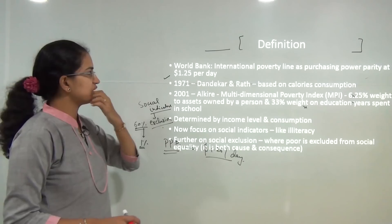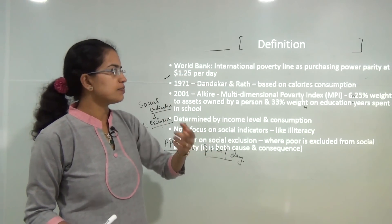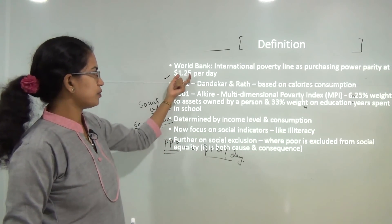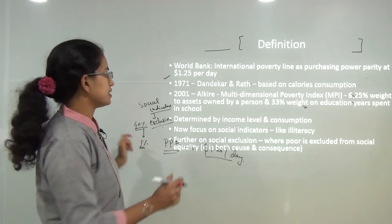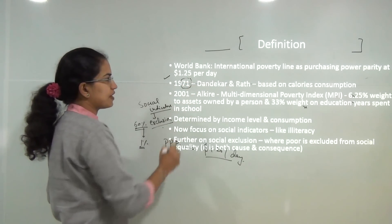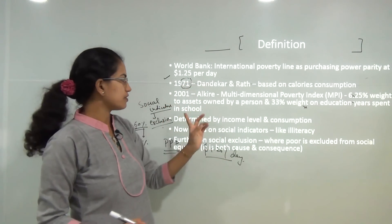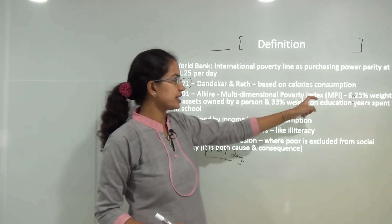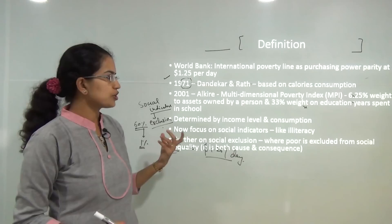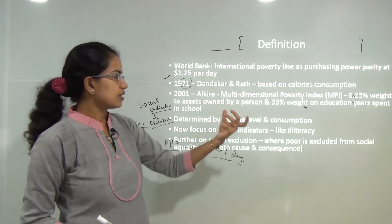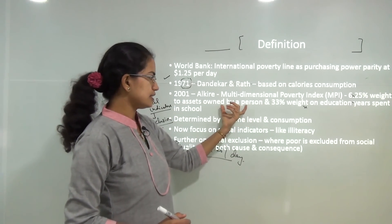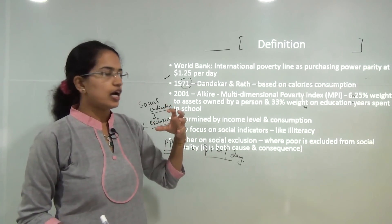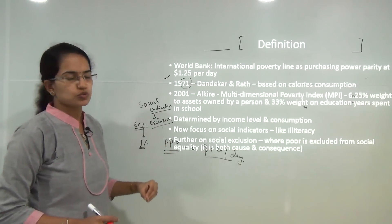The World Bank defined the international poverty line based on Purchasing Power Parity (PPP) at $1.25 per day. In 1971, Dandekar and Rath defined poverty based on calorie consumption. In 2001, a Multidimensional Poverty Index was introduced, giving nearly 6.25% weight to assets owned and 33% to education and years spent in school.